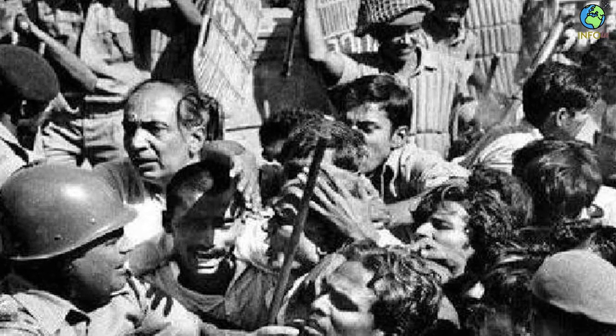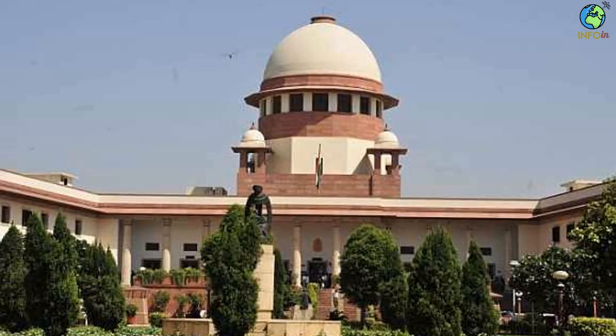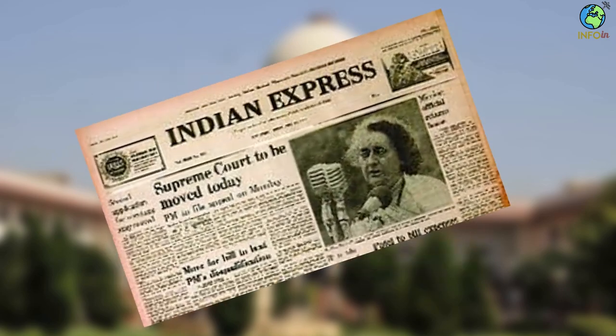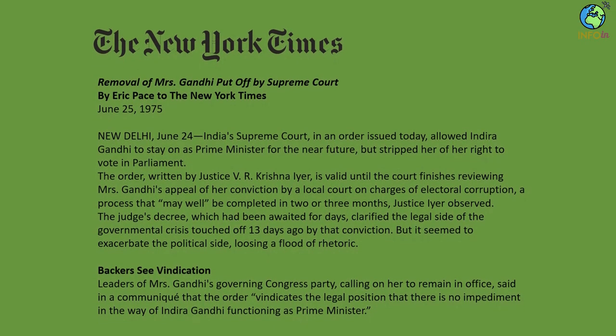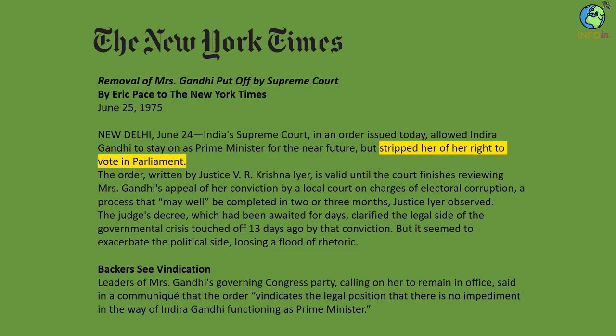Her election from Rae Bareli was declared null and void. She was barred from holding any elected office for six years. The court ordered Congress R to remove Mrs. Gandhi from all her posts within 20 days. This sparked a series of protests from Congress R workers all over the country. Mrs. Gandhi appealed against the judgment in the Supreme Court, and Justice V.R. Krishna Iyer, on 24 June 1975, upheld the High Court judgment, ordering that the privileges Mrs. Gandhi received as an MP be stopped and that she would be barred from taking part in parliamentary proceedings. However, she was allowed to continue as Prime Minister pending the resolution of her appeal.